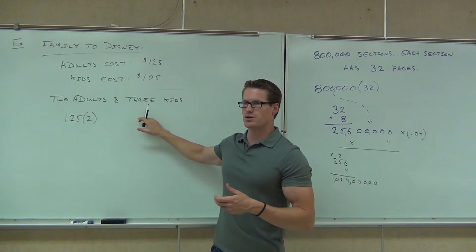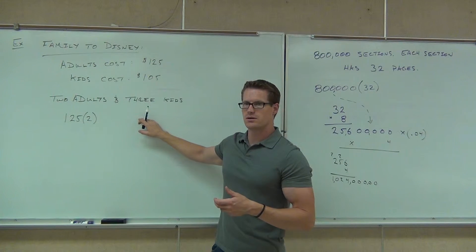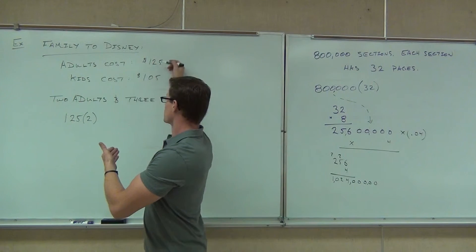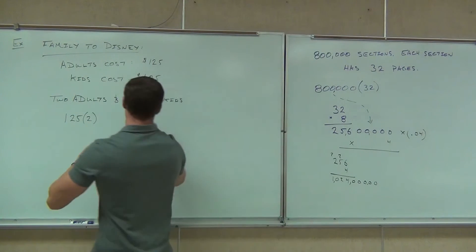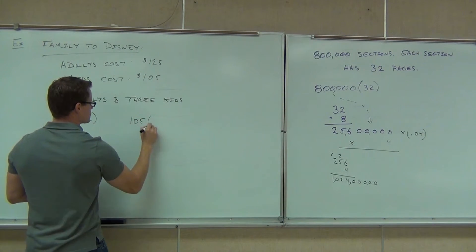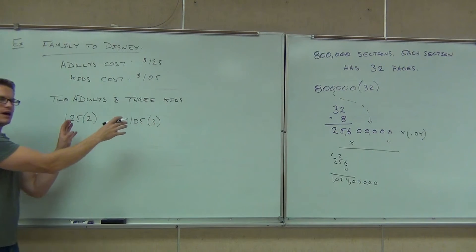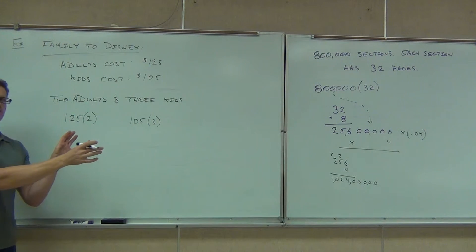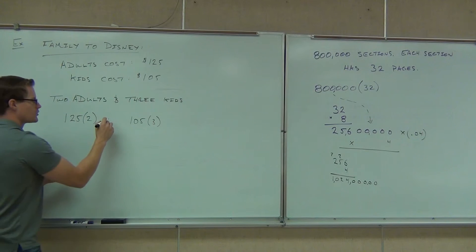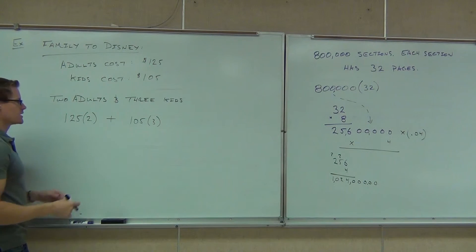How do we calculate how much your three kids are going to cost? 105 times 3. After we figure out these products, how are we going to figure out the total? Add. So if we add those together, that's what the 'and' actually means. Add them together.